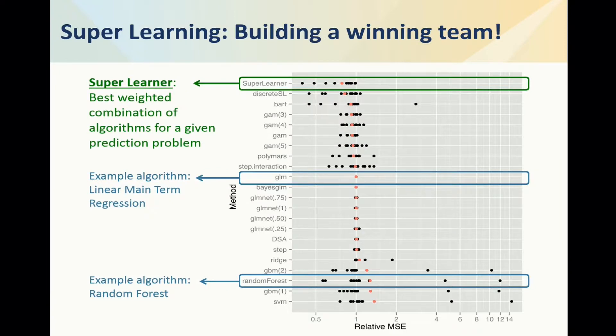This is a complicated picture, but what you see here are all the algorithms in the library of the super learner, with the super learner at the top. There are 15 dots representing 15 publicly available data sets. The red one is the average performance. The more to the left, the better — and you see that the super learner wins.